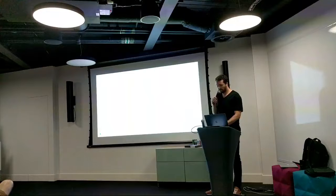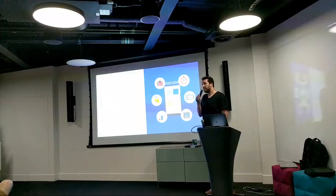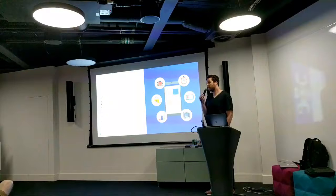Now we'll jump into what's actually included in the product. Right now there are five performance areas in Android Vitals: battery, stability, rendering, startup time, and permissions.